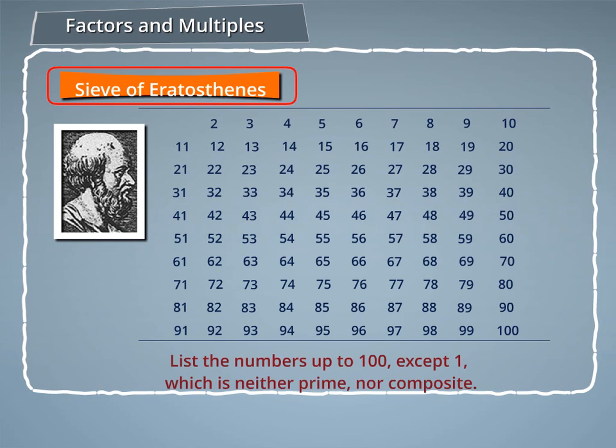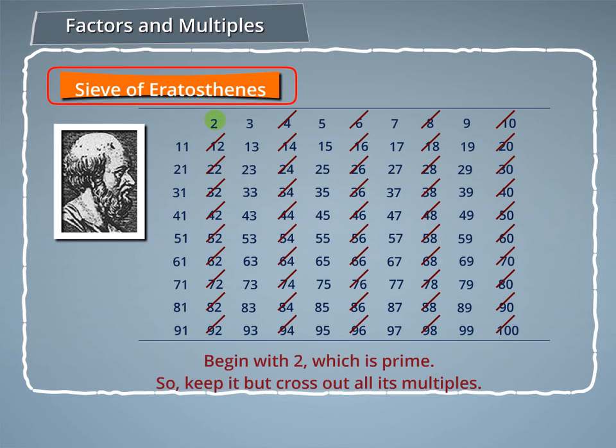Step 1: List the numbers up to 100 except 1, which is neither prime nor composite. Step 2: Begin with 2, which is prime, so keep it but cross out all its multiples.